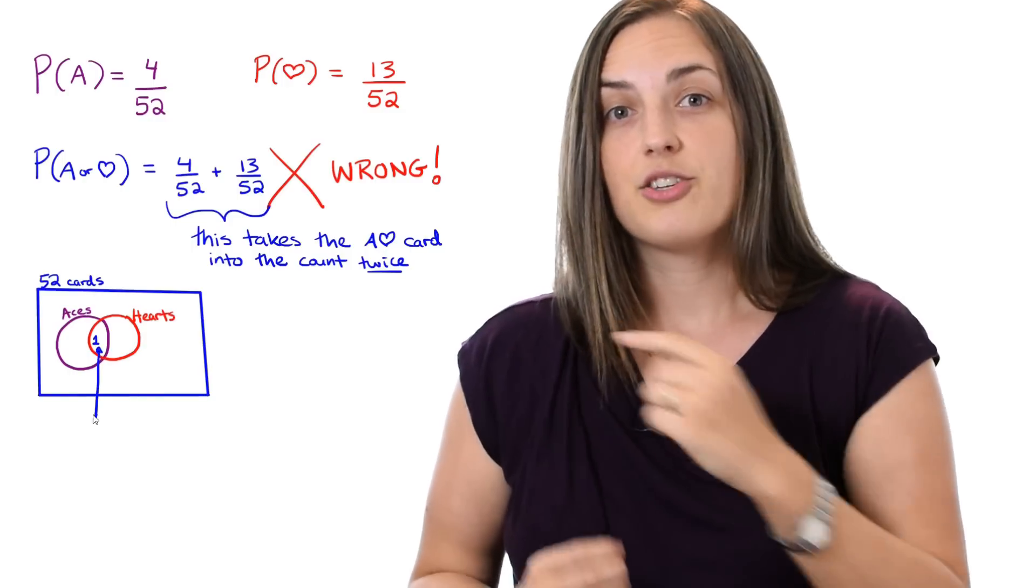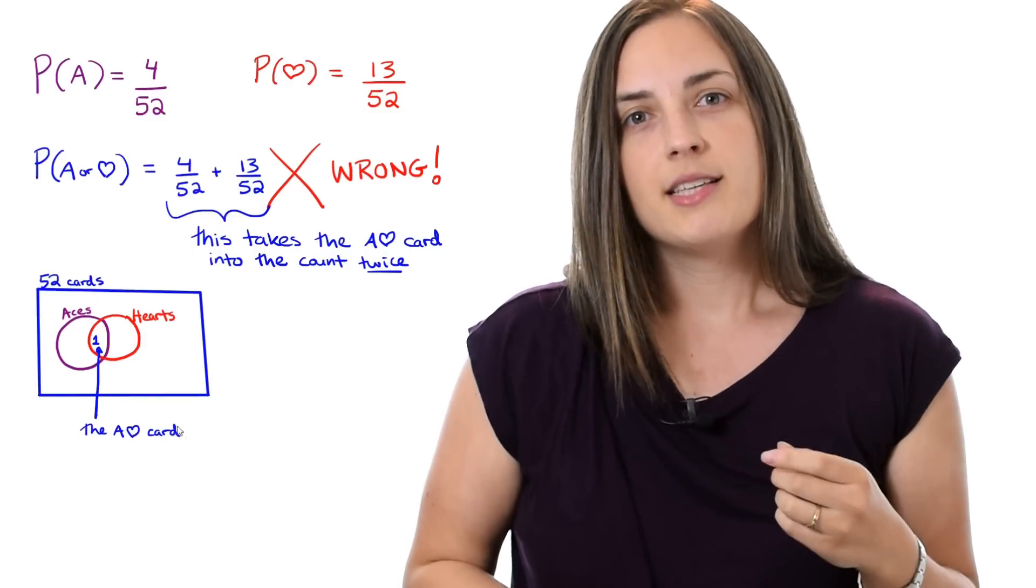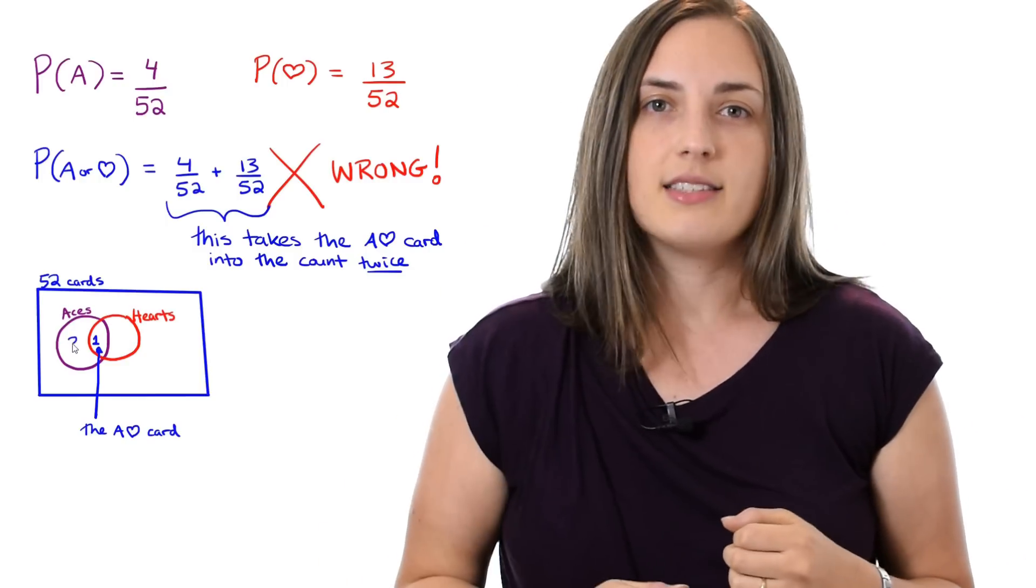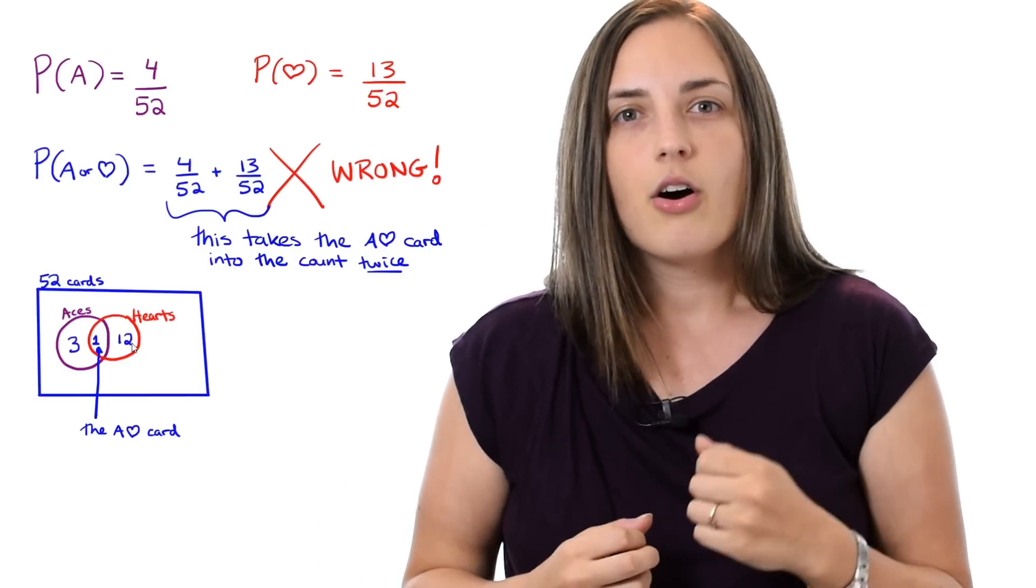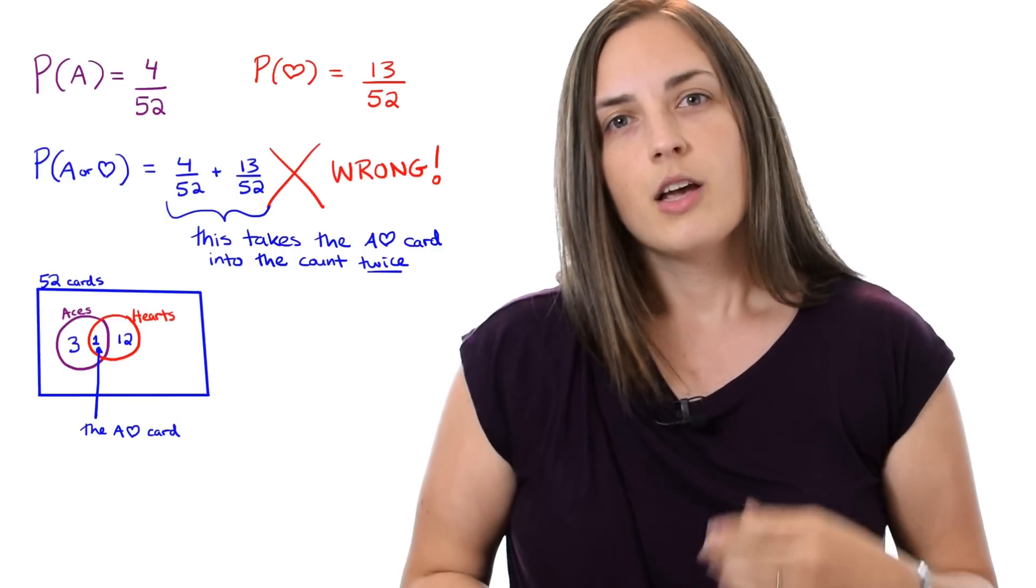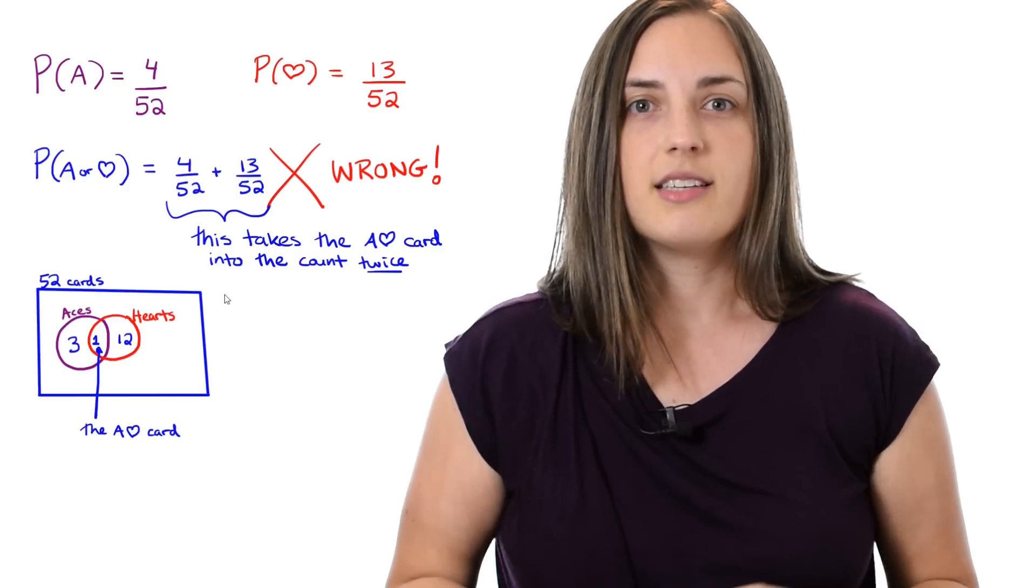So that is in the intersection, in that overlap zone. What that means is that there are three other Aces which are not Hearts. And there are 12 other Hearts which are not Aces. So that's the Venn diagram which explains the example.